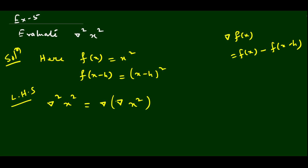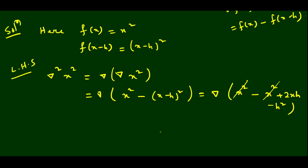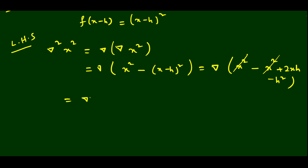Computing nabla x² = x² − (x−h)² = x² − (x² − 2xh + h²) = 2xh − h². So nabla² x² = nabla(2xh − h²). Since h is constant, we split: 2h · nabla(x) − nabla(h²).